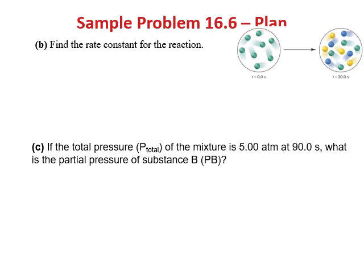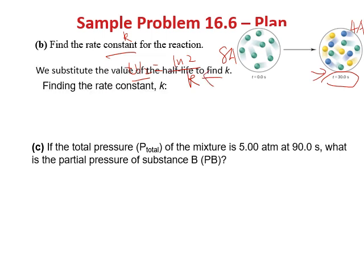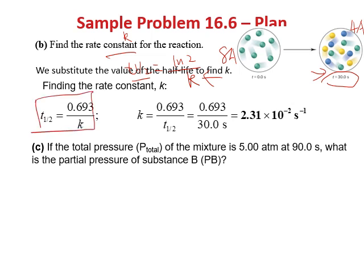In question B, find the rate constant k. Since 30 seconds is the half-life (8 A became 4 A), and for a first-order reaction the half-life equals ln2 divided by k, we get k = 0.693 divided by 30 seconds = 2.31 × 10⁻² per second.